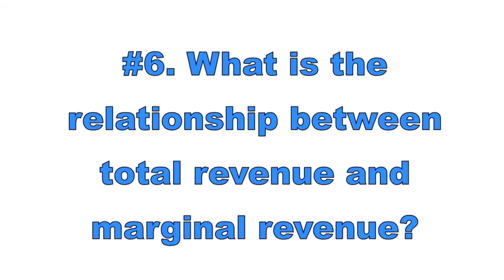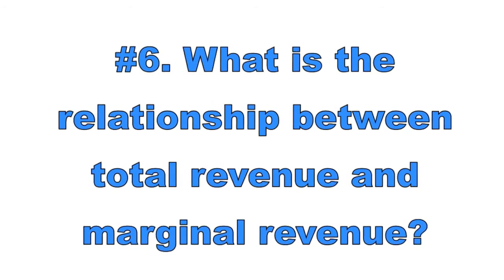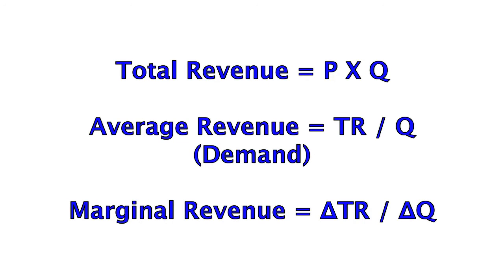Number six: what is the relationship between total revenue and marginal revenue? There are three types of revenue to consider for a firm: total revenue, average revenue, and marginal revenue. Total revenue equals price times quantity. Average revenue equals total revenue divided by quantity. Marginal revenue equals the change in total revenue divided by the change in output. By calculating a firm's average revenue, we can derive its demand curve. Marginal revenue is the additional revenue a firm gains from producing one more unit of output.